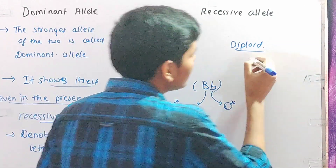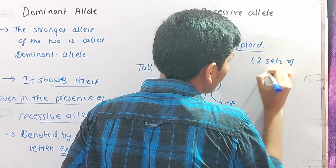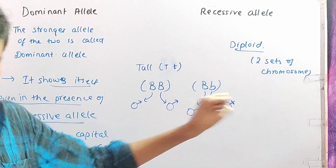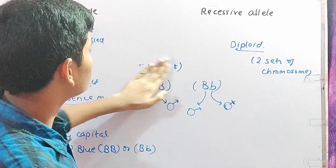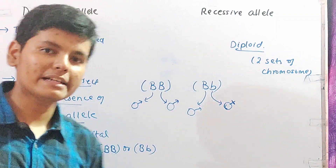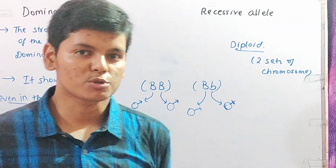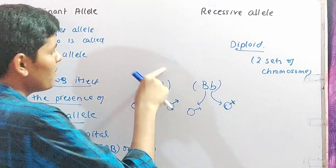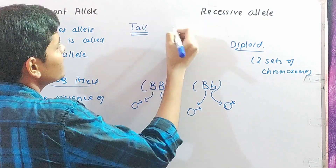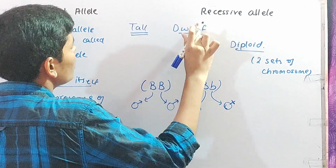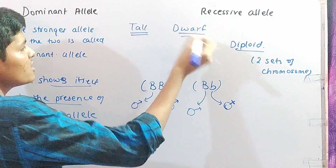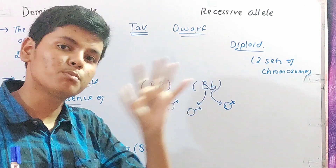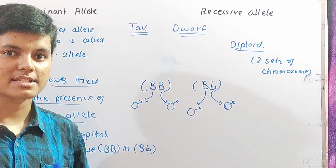When we talk about gametes, gametes are haploid — represented by n, where n is the number of chromosomes. The plant body is diploid — represented by 2n, where n is the number of chromosomes. So 2n means diploid and n means haploid. The gametes are in haploid condition. From the father, one haploid gamete was capital B (blue), and from the mother, one haploid gamete was small b (brown). When these both combine, we get the diploid capital B, small b condition.